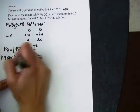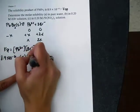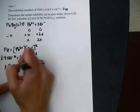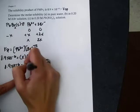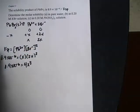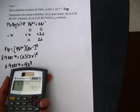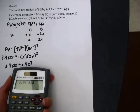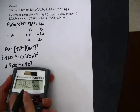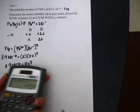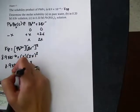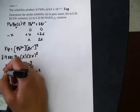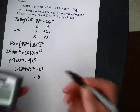And so I can plug in my Ksp, X for lead, 2X squared for Br. All right, so then I squared the 2X, so it's 4X squared times X. And so now I'm dividing both sides by 4 to get the X cubed by itself.